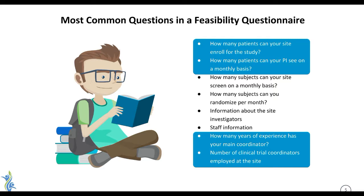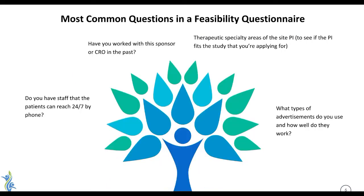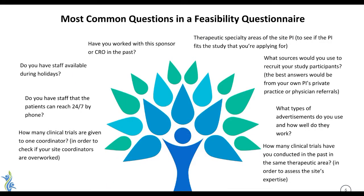They'll look to see how many study coordinators you have at your research site, and how many clinical trials are assigned to just one coordinator to make sure they're not past capacity. They'll also look to see if you have patients available around the clock — if you can reach out to patients 24/7, or at least have a call service that will talk to patients and forward them to the right area. This is mainly for any adverse events, and they'll also see if you have staff available during holidays for that same reason — adverse event monitoring.